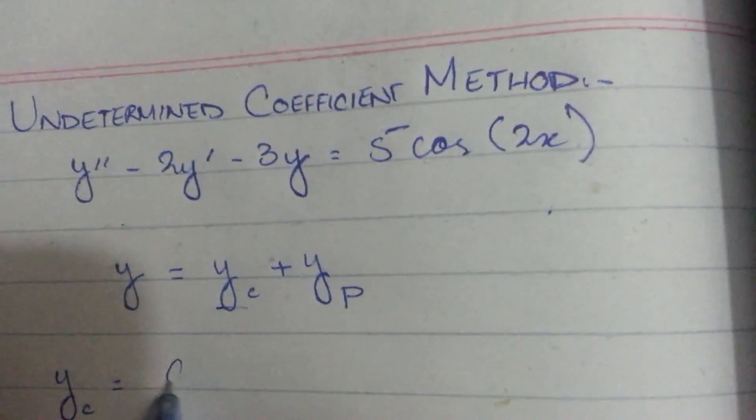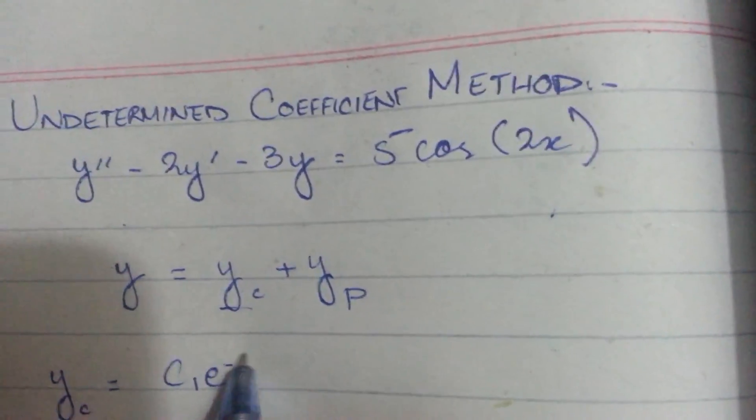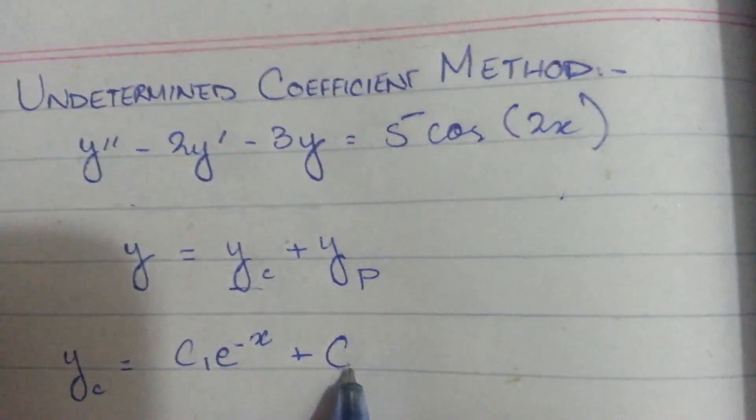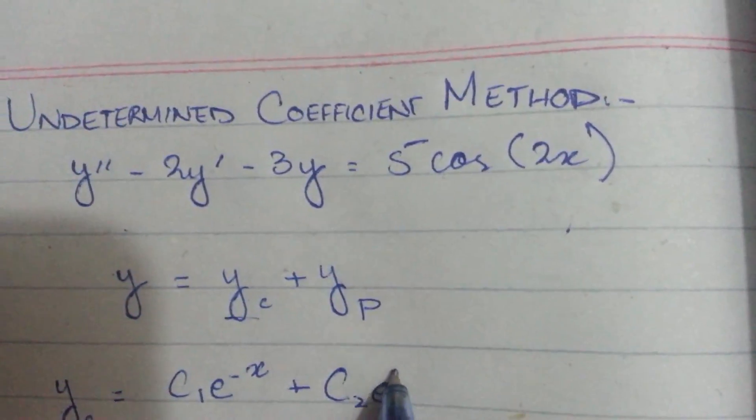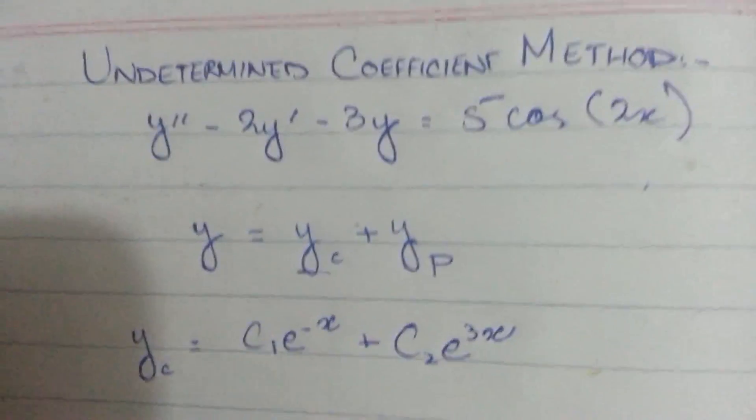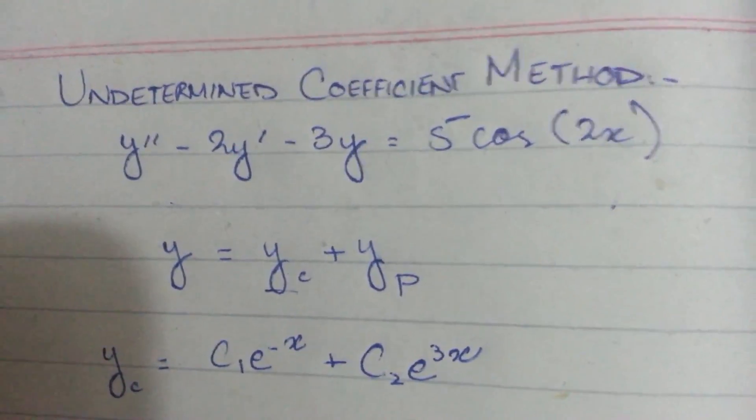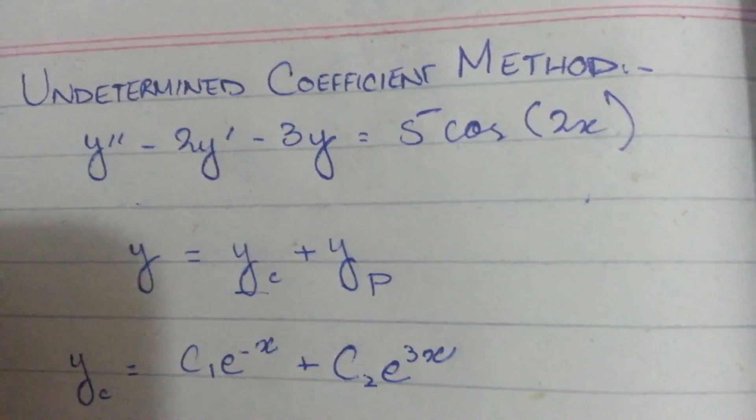So the yc of this equation will be c1 e to the power minus x plus c2 e to the power minus 3x. Now we will find yp or trial yp.